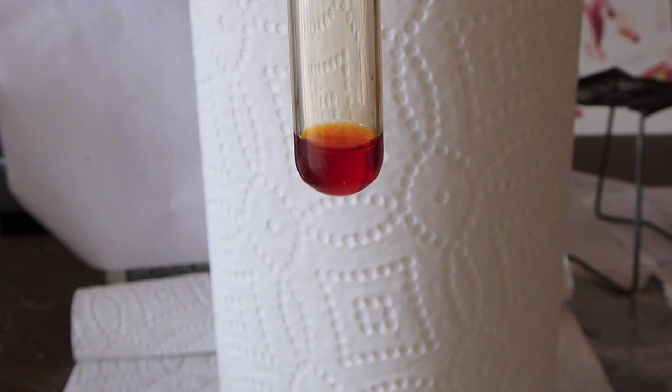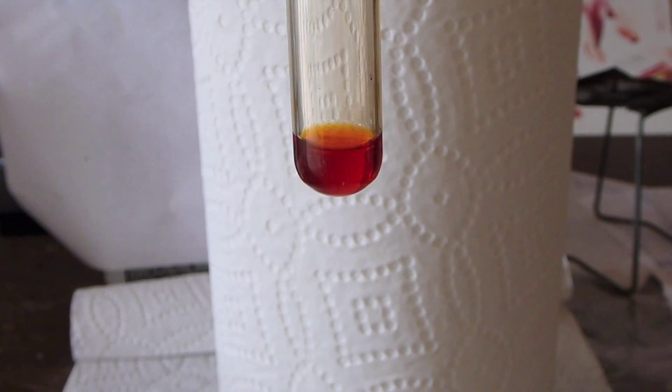Now I'm going to add a couple drops of a saturated solution of sodium persulfate. Persulfate is a very strong oxidizer, and it is going to oxidize the ruthenate all the way up to perruthenate. So then you're going to have a solution of pure perruthenate.